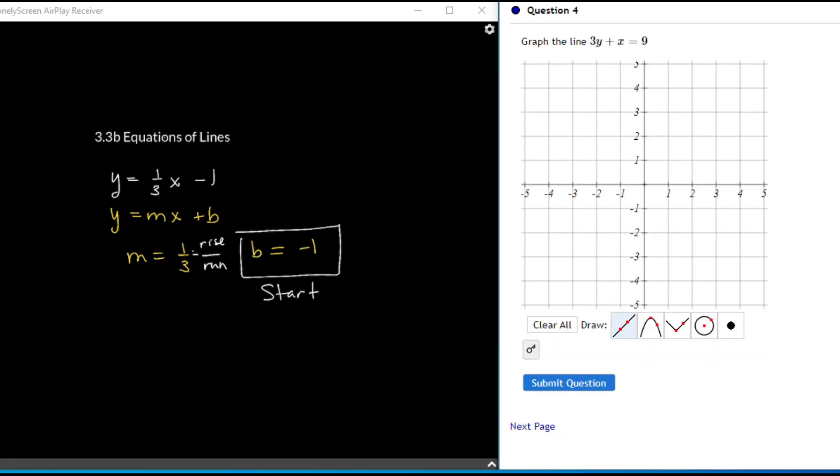Now looking at the next question, this is asking us to graph the line 3y plus x equals 9. There are two different methods for this. The first method would be to create a table of values for x and y, or you could change this equation to slope-intercept form.